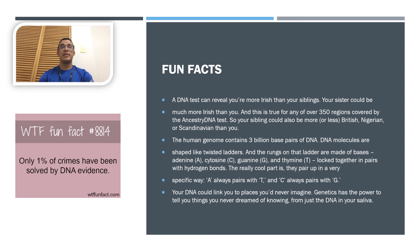The human genome contains 3 billion base pairs of DNA. DNA molecules are shaped like twisted ladders, and the rungs on that ladder are made of bases — adenine, cytosine, guanine, and thymine — locked together in pairs with hydrogen bonds. They pair up in a very specific way: A always pairs with T, and C always pairs with G. Your DNA could link you to places you'd never imagined. Genetics has the power to tell you things you never dreamed of knowing from just the DNA in your saliva.